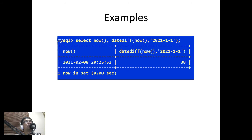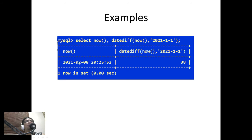Here is an example of a date function. The NOW() function returns the current date and time based on the system date. DATEDIFF allows you to place two dates and it returns the number of days between them. In this example, there are 38 days between today, February 8, 2021, and January 1, 2021.